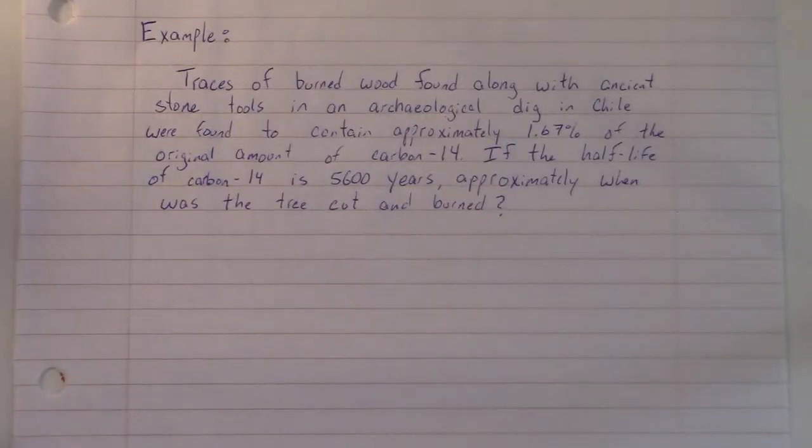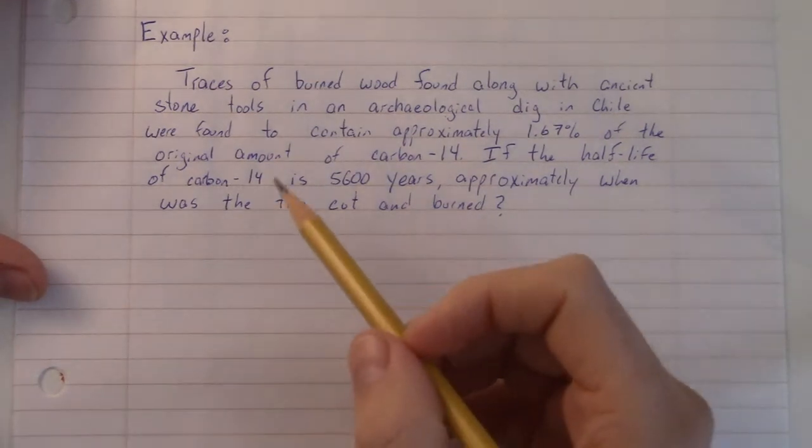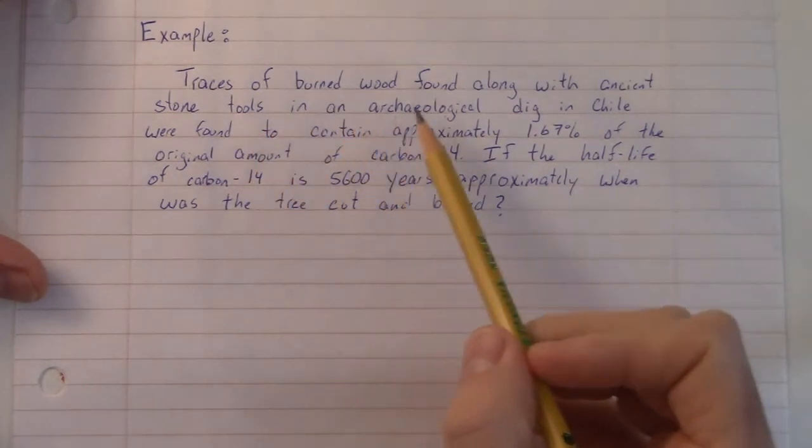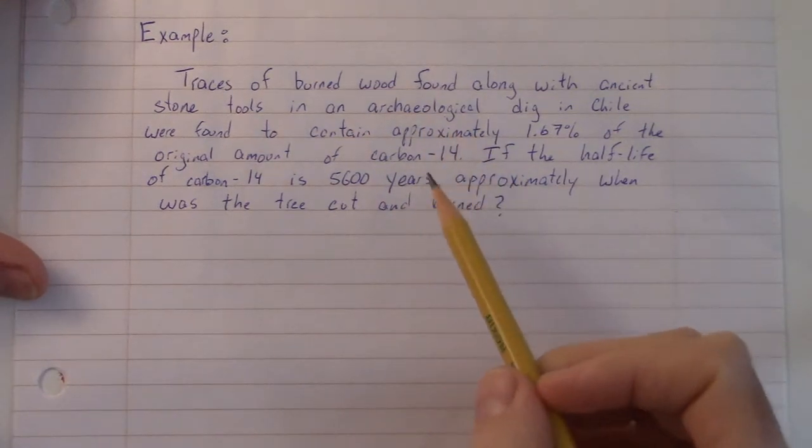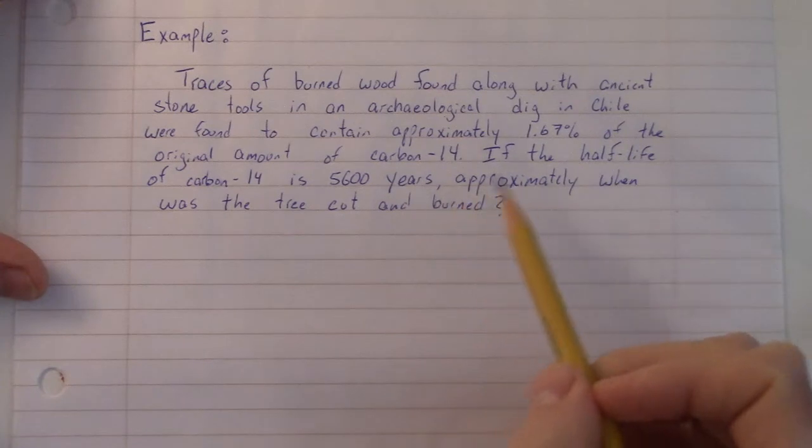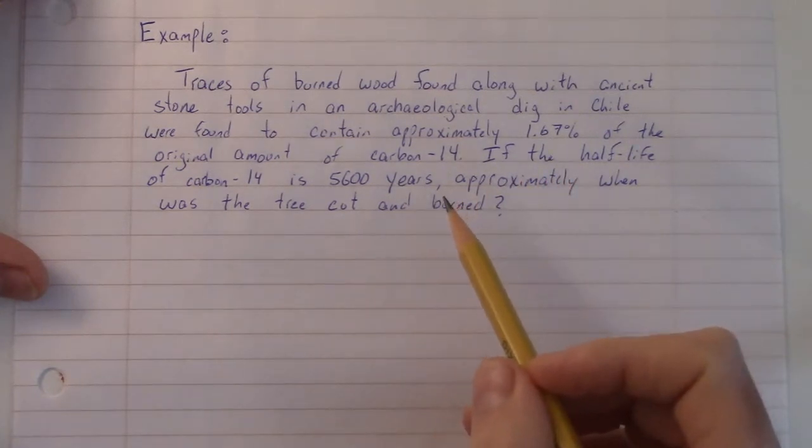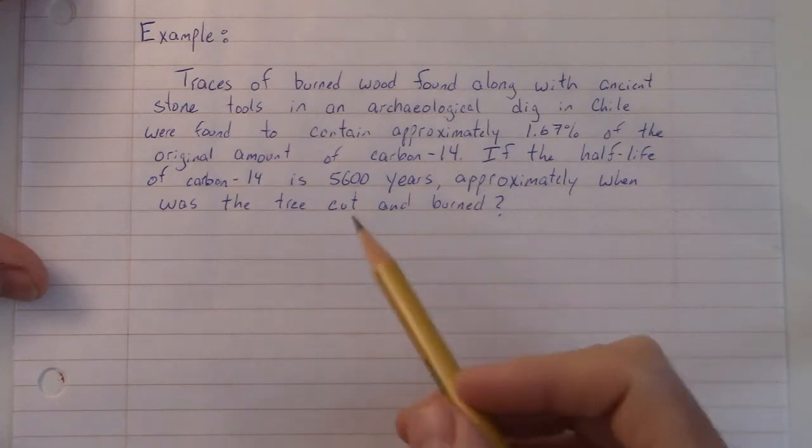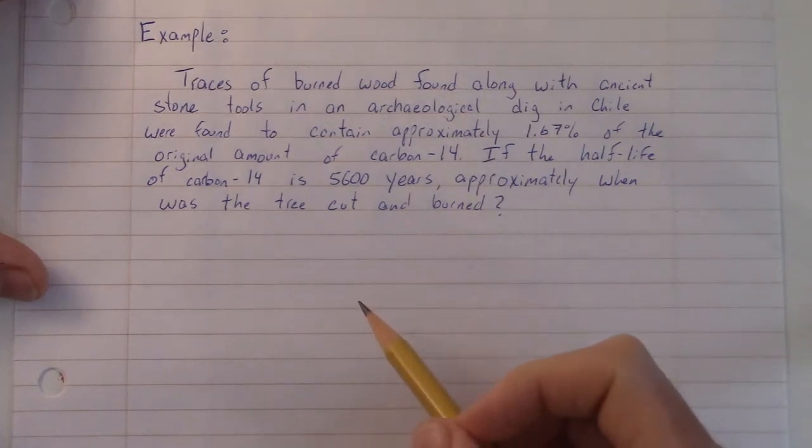Alright, in this example we are examining a problem where we have some carbon dating. Just reading this, traces of burned wood found along with ancient stone tools in an archaeological dig in Chile were found to contain approximately 1.67% of the original amount of carbon-14. If the half-life of carbon-14 is 5,600 years, approximately when was the tree cut and burned?